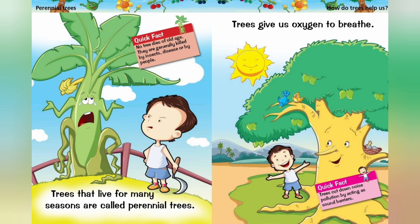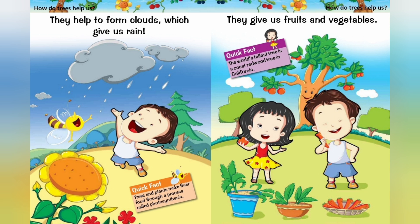How do trees help us? Trees give us oxygen to breathe. Trees cut down noise pollution by acting as sound barriers. They help to form clouds which give us rain. They give us fruits and vegetables. Trees and plants make their food through a process called photosynthesis.